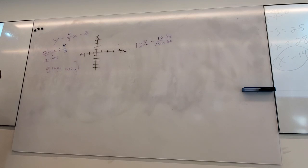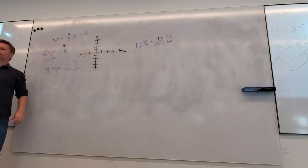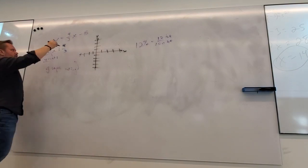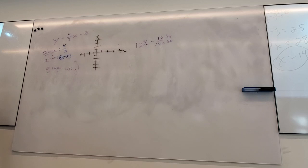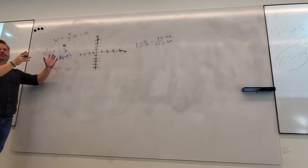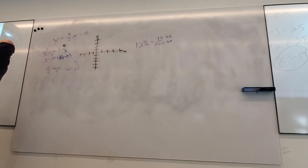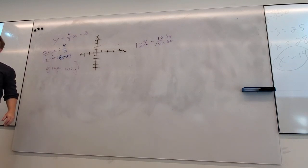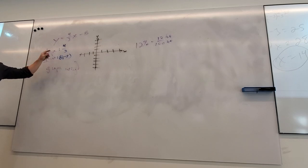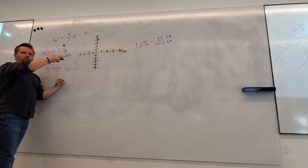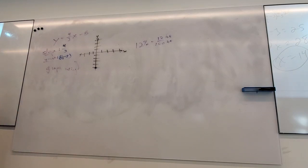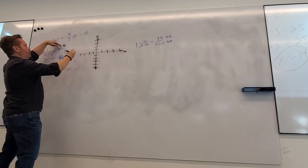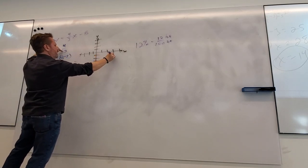Where do I start? Plot a point at the y-intercept: zero, negative five. Then what the slope tells me is how to move. I go four up and three over — one, two, three, four up, one, two, three over — and I get back to the path. Pretend that's straight. The slope works either direction: four up and three right, or four down and three left — same line.